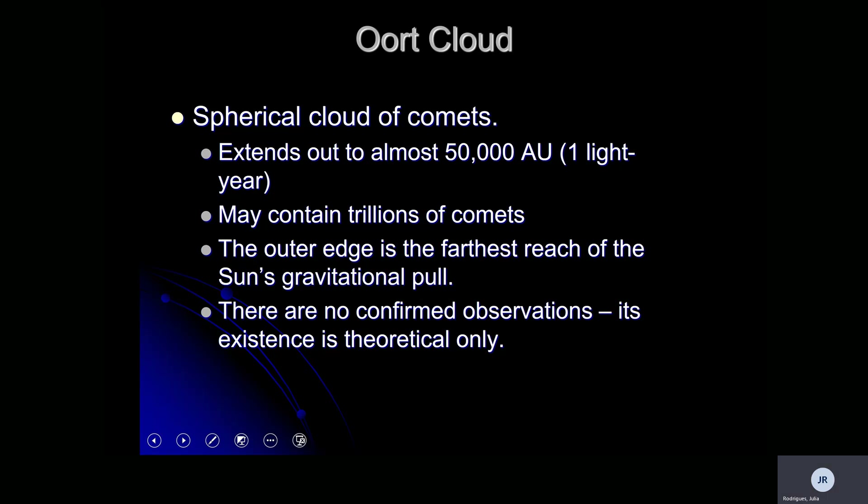The Oort cloud is a spherical cloud of comets extending out almost 50,000 AU — nearly a light year away — and it contains trillions of comets. It sits at the outermost farthest reach of our sun's gravitational pull. There are no confirmed observations of this Oort cloud, so its existence is only theoretical at this point, but the prediction is that it contains trillions of comets way out there.